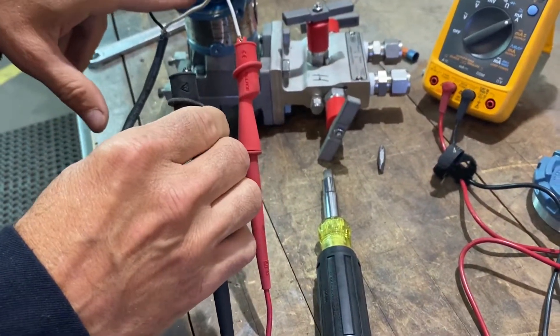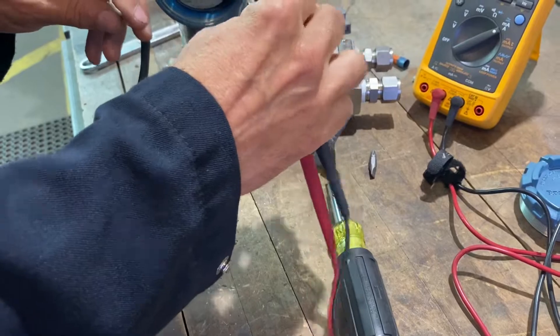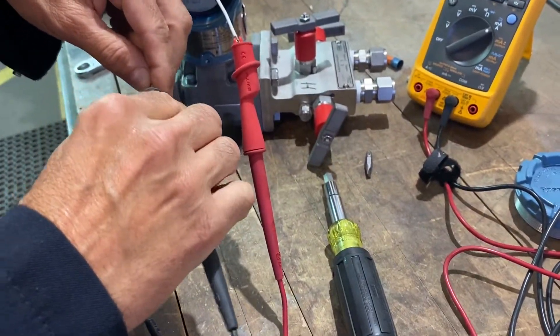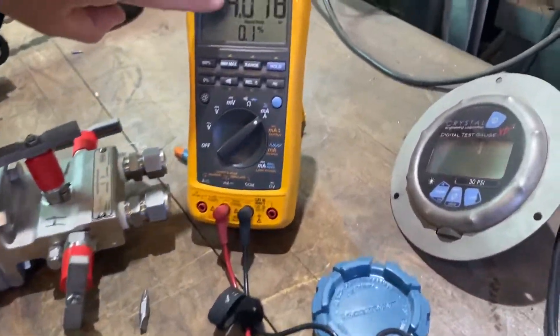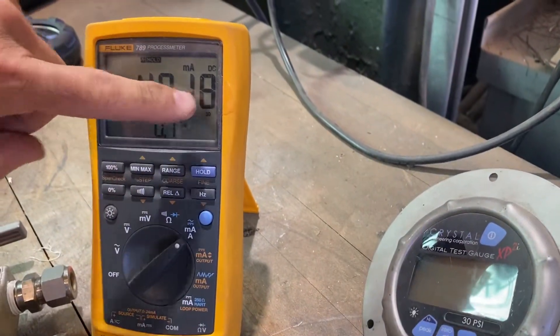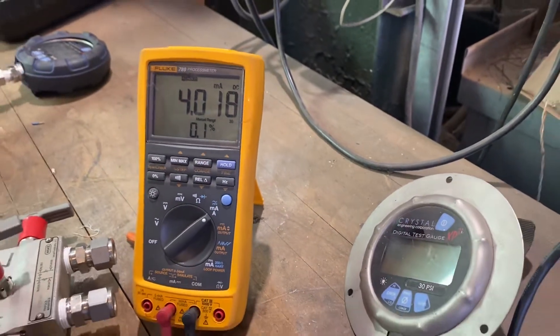I'm sorry, if you break the negative, you put the positive to the negative, and then your black lead to here. And then, you're reading milliamps. You have 4.018, which essentially is zero.